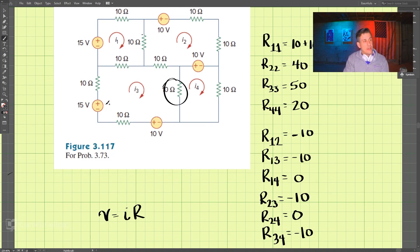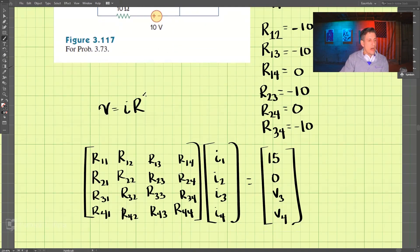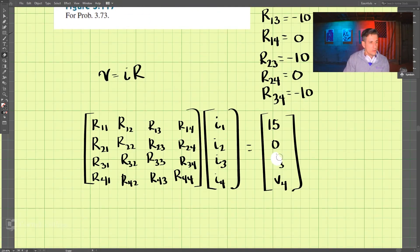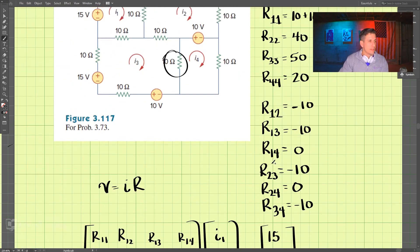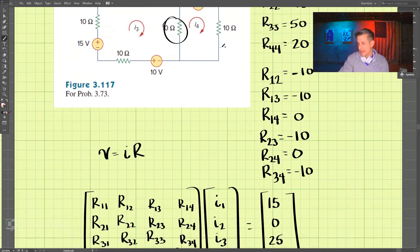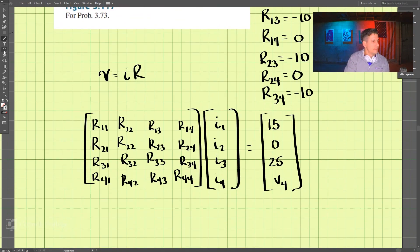And V3, it's positive 25, so that's positive 25. And then lastly it goes from positive, we have negative 10 and negative 15, we'd write those as positive, so that should be 10 plus 15, that's 25. So that's positive 25. And then lastly it goes from positive to negative, that is negative 10.